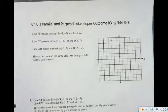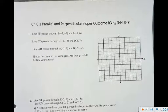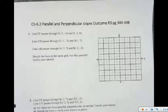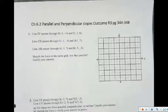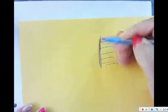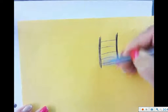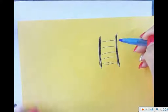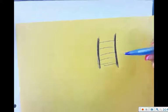Looking at 6.2, parallel and perpendicular lines. What does parallel mean? Two lines that are exactly the same distance away from each other at every single point. A couple of things in real life that are parallel are train tracks — those lines are always the same distance apart from each other all the time. If that were to differ at all, the train would have trouble driving on the track.